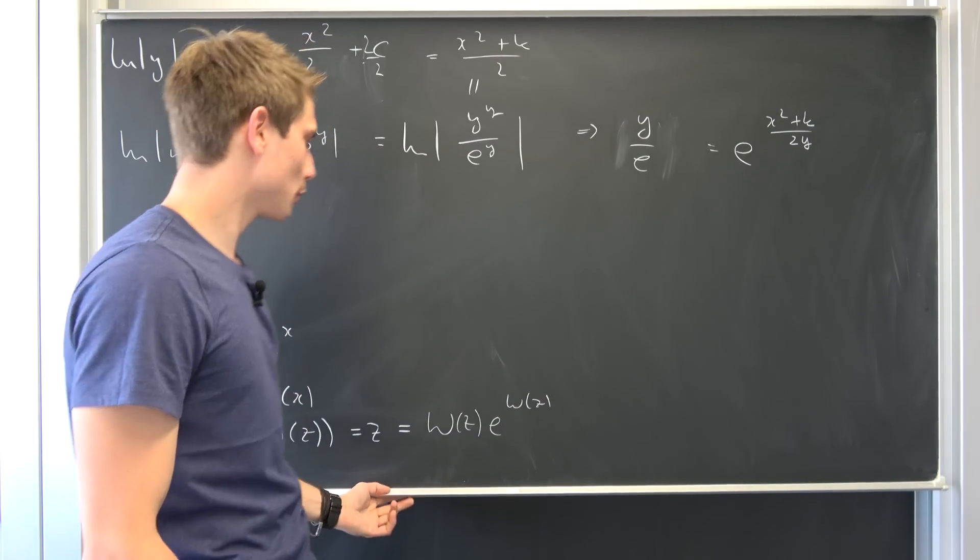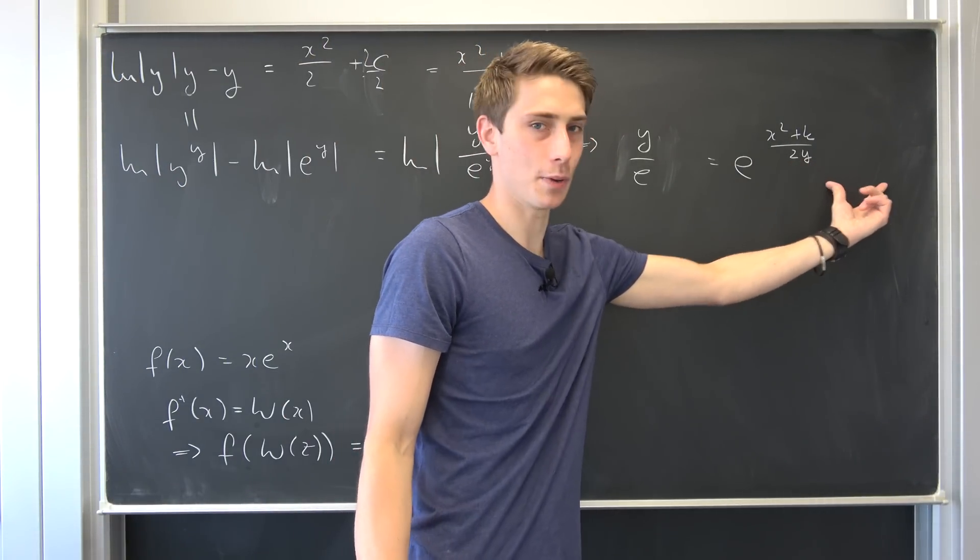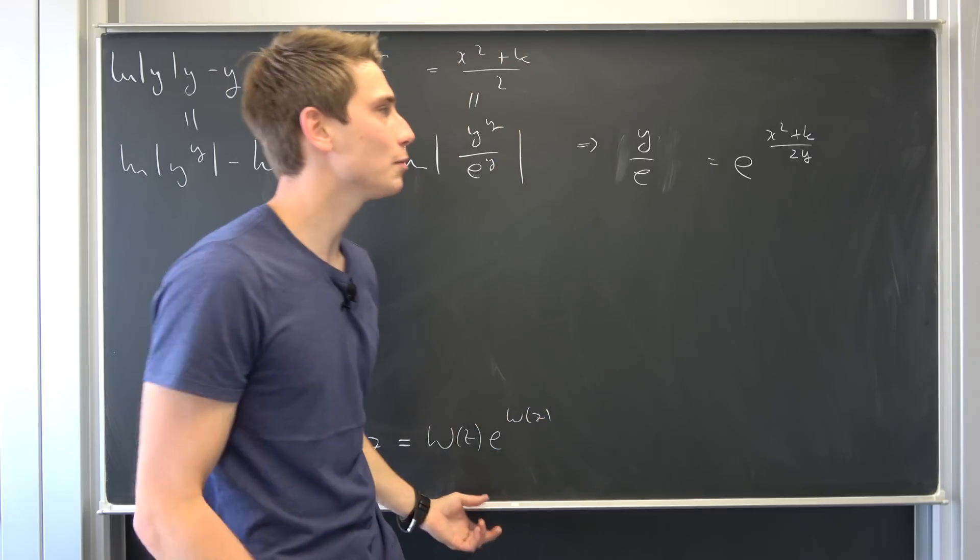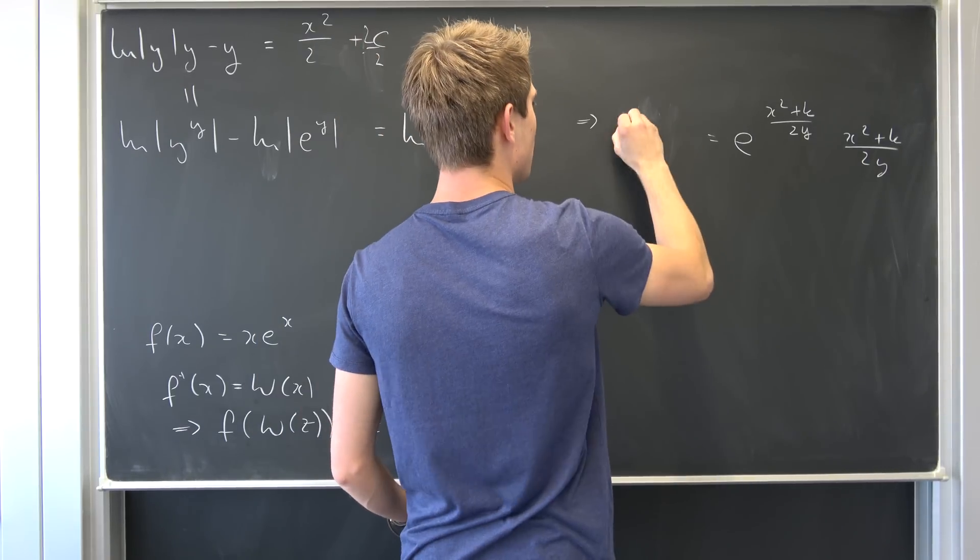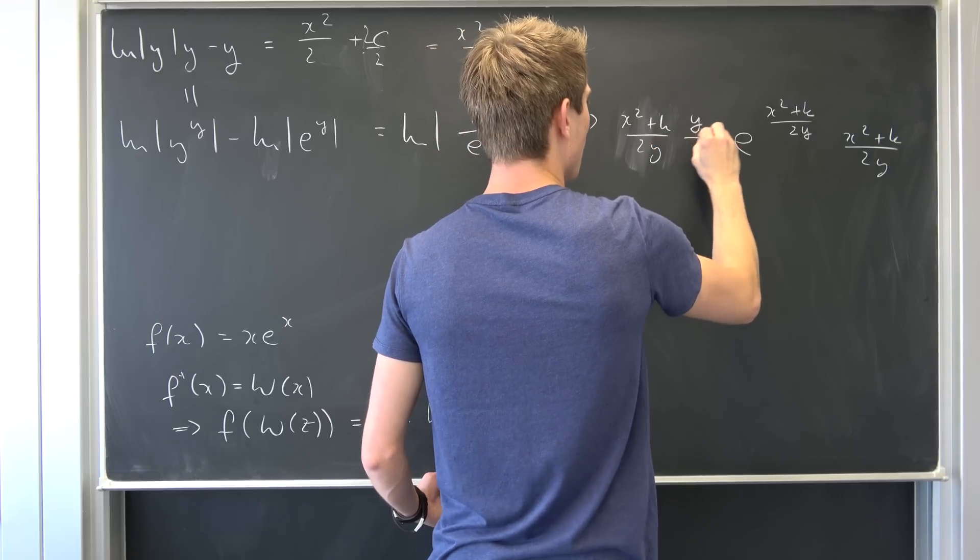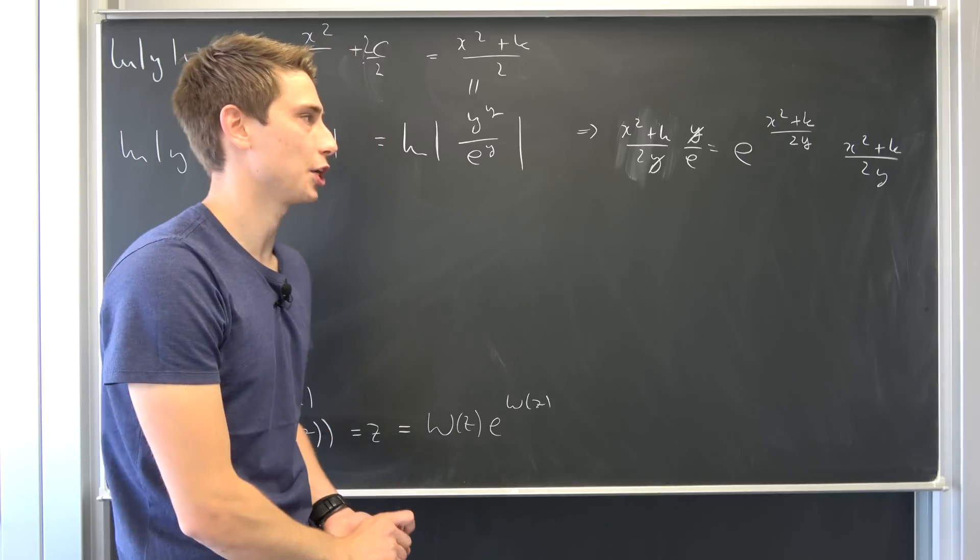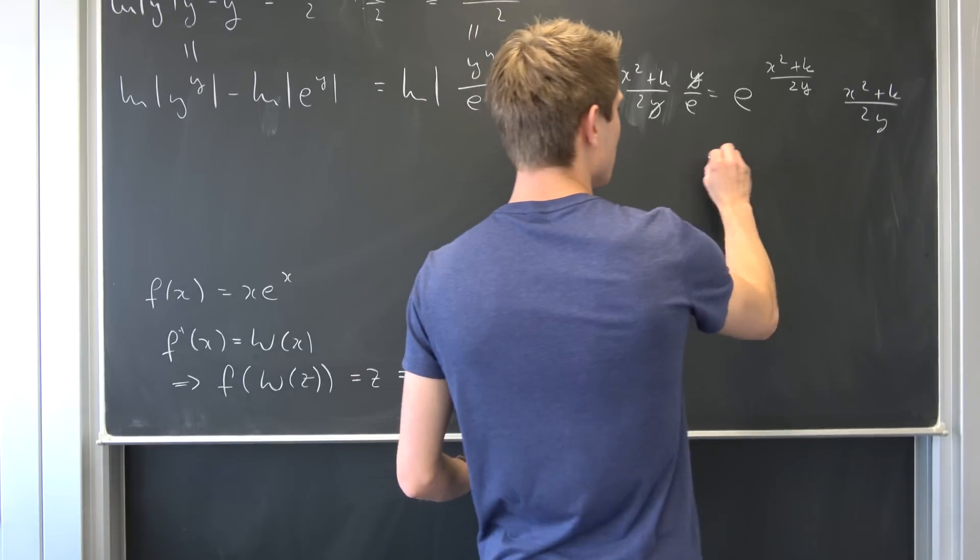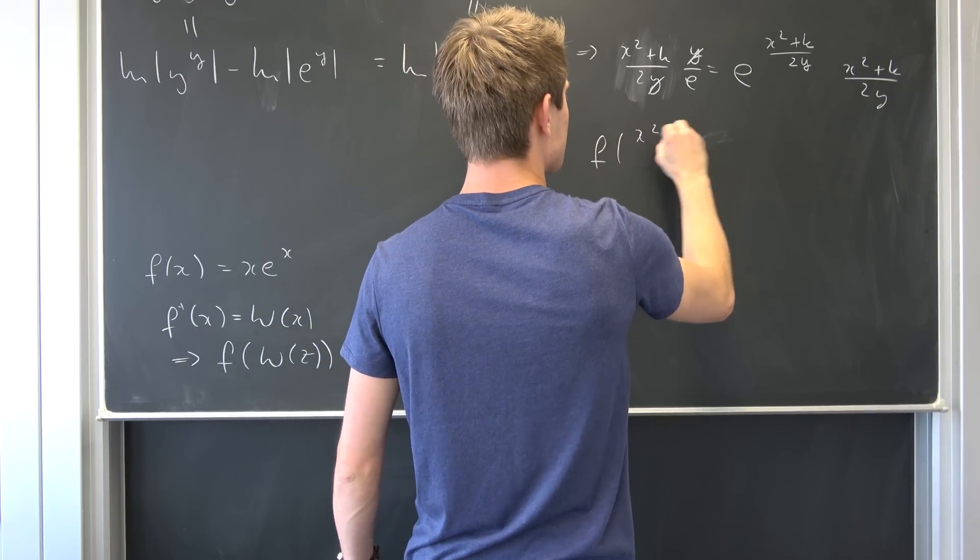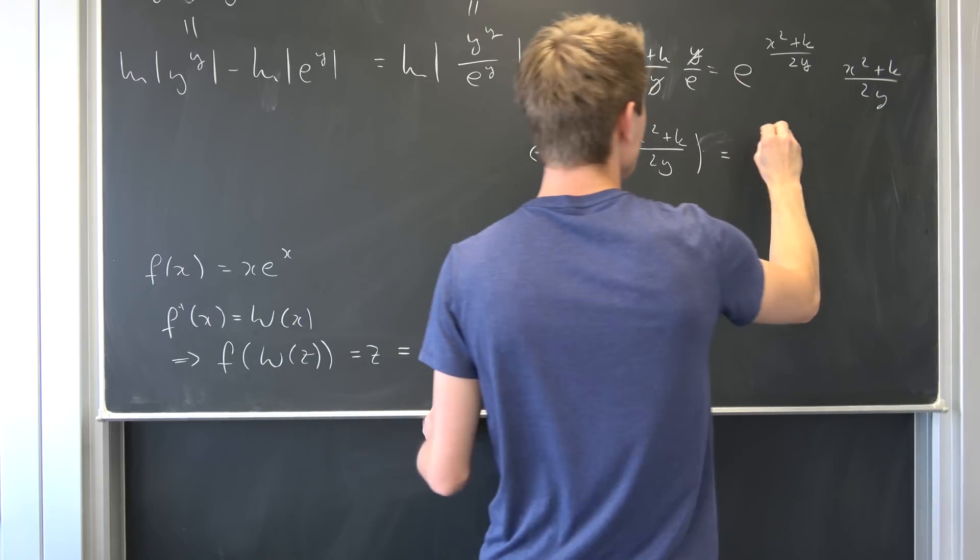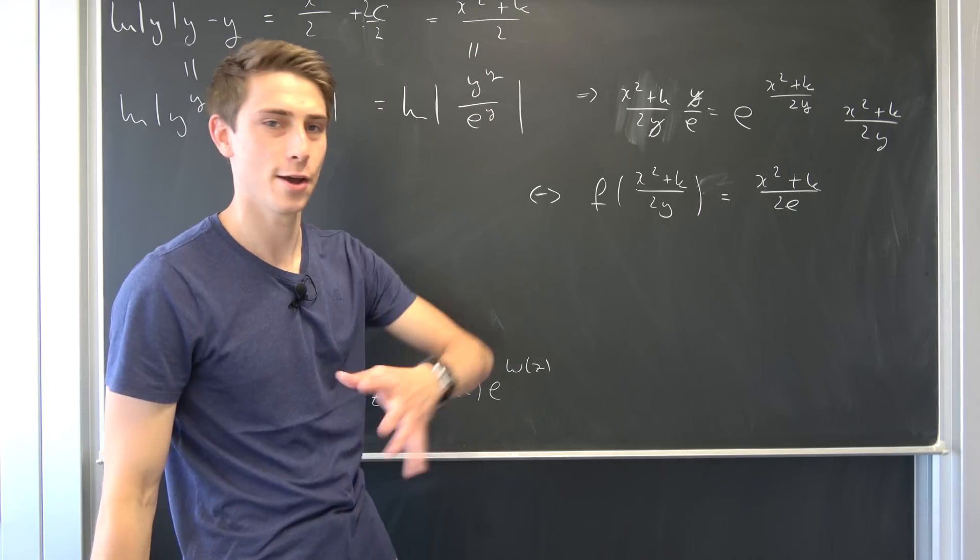And well just like I said before we want to bring it into this form right here. So we want to have this exponent multiplied by this exponential function if you know what I mean. So why not multiply both sides by x squared plus k over 2y. Same thing on this side. So we have x squared plus k over 2y times y over e. And you might notice this and that is going to cancel out. So this is quite good actually. And you see this thing right here is nothing but f of x squared plus k over 2y now being equal to x squared plus k over 2 times e. And it's quite cool how the exponential function just pops up randomly.